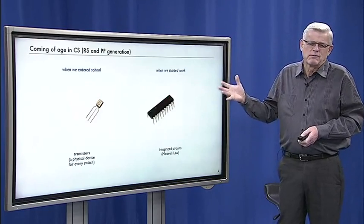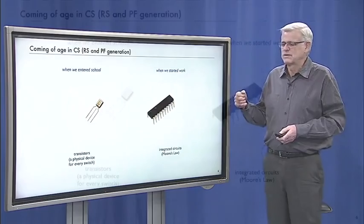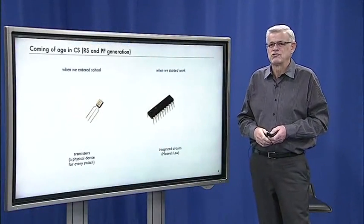And with respect to technology, there were huge changes. When we started school, computers were big, expensive, rare. There were physical devices for every switch or for every bit. But not that much longer when we started research and teaching, we had integrated circuits and computers were becoming ubiquitous and fast and cheap.